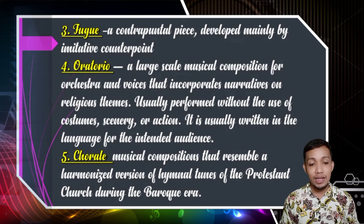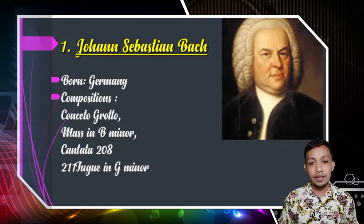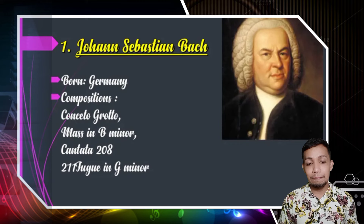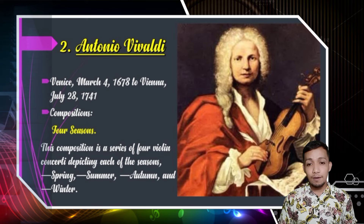Here are the famous composers of the Baroque period. First one was Johann Sebastian Bach. He was born in Germany, and his compositions include concerto grosso, Mass in B minor, Cantata 208, and Fugue in G minor. The second prominent composer during the Baroque period was Antonio Vivaldi. He was from Venice, and he was born on March 4, 1678, and died on July 28, 1741.